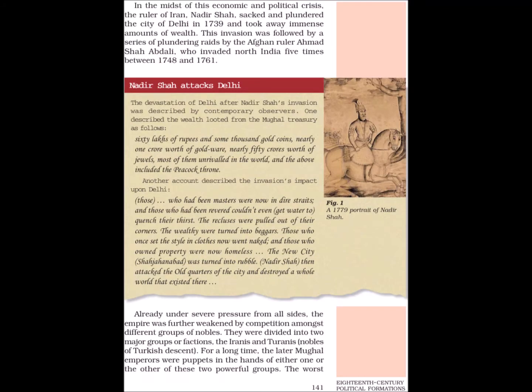In the midst of this economic and political crisis, the ruler of Iran, Nadir Shah, sacked and plundered the city of Delhi in 1739 and took away immense amounts of wealth. This invasion was followed by a series of plundering raids by the Afghan ruler Ahmed Shah Abdali who invaded North India five times between 1748 and 1761.